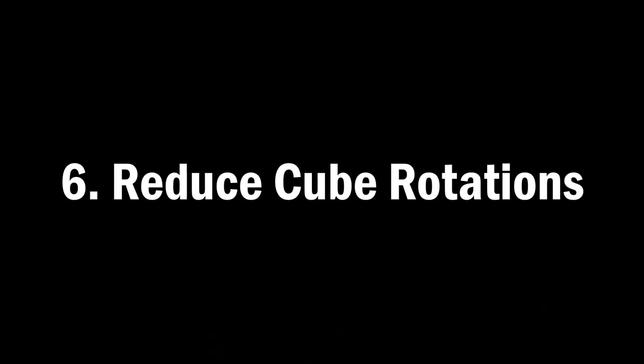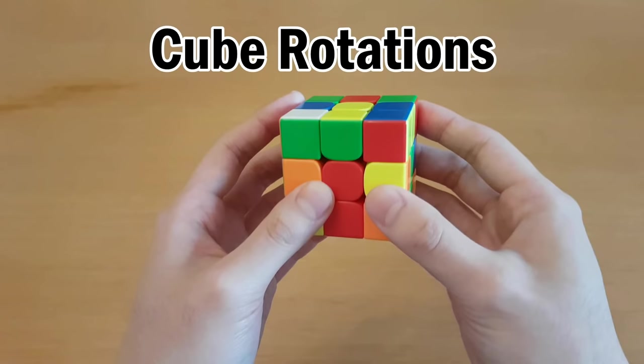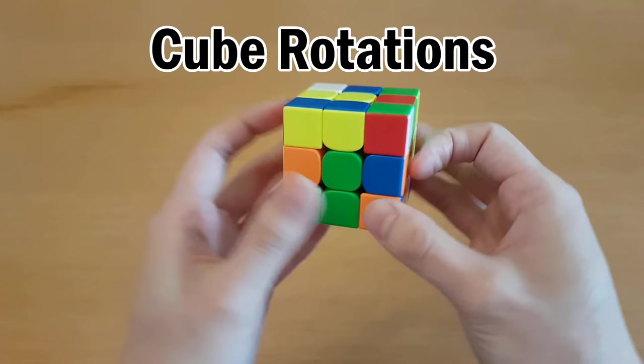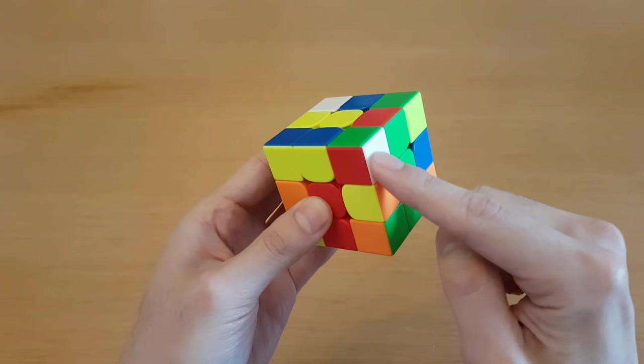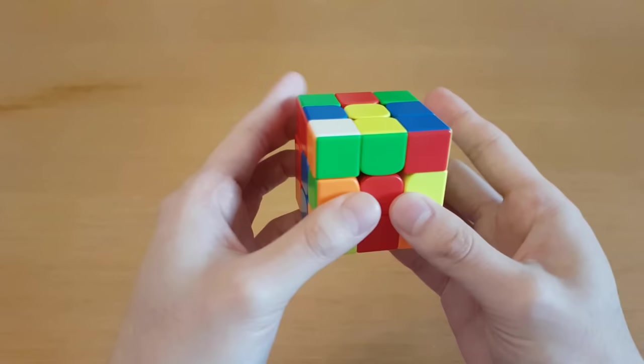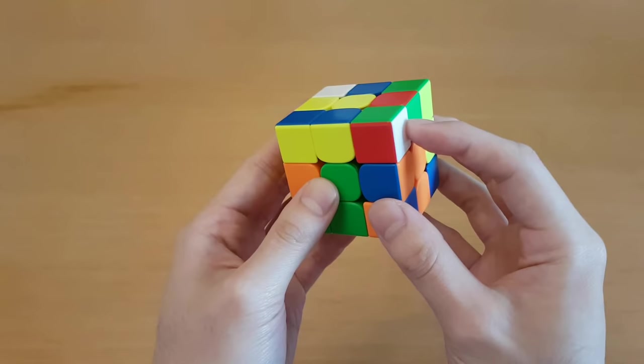Number six, reduce cube rotations. A cube rotation is just turning the whole cube to help you find pieces or reposition your hands. We want to avoid cube rotations because they are slow and don't accomplish any turns on the cube. One example of how to avoid cube rotations is during the first two layers no matter what method you use you want to turn the top to help you find new pieces. Usually just turning the top will help you find pieces you want and if you did a cube rotation instead you could still find it but that is just slower.